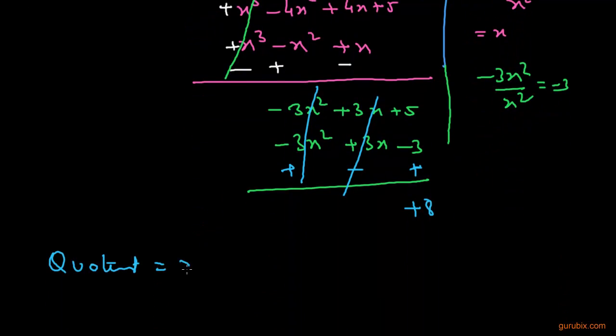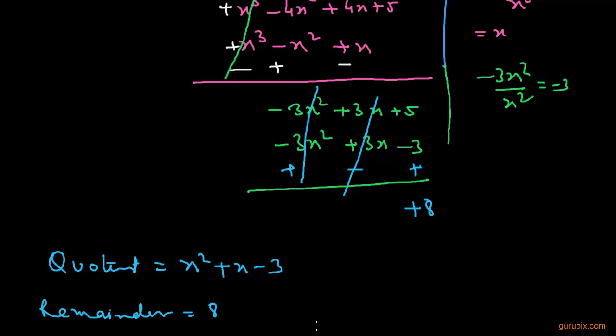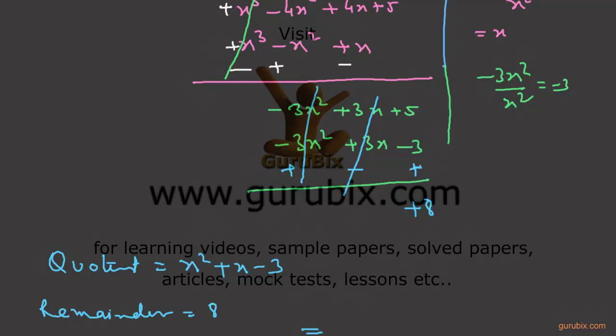So the quotient is x² + x - 3 and the remainder is 8. This is the solution of the question. Thank you.